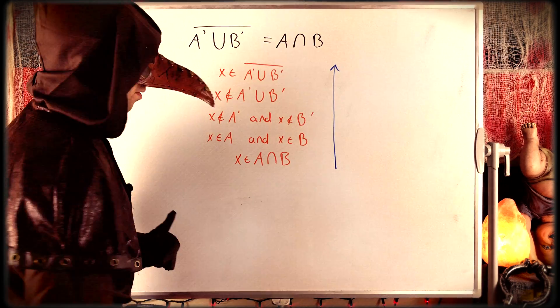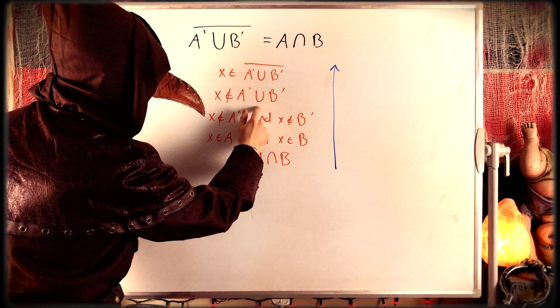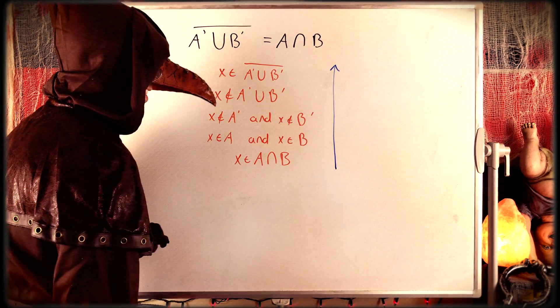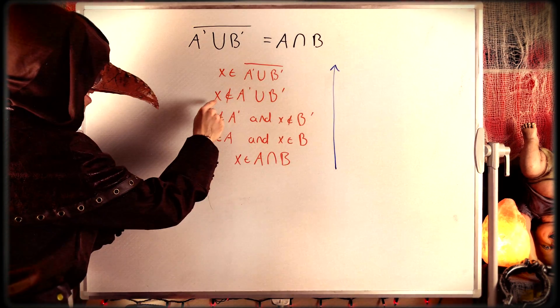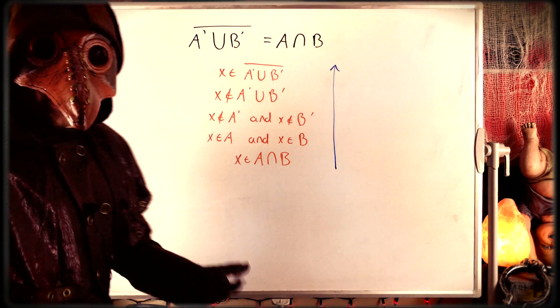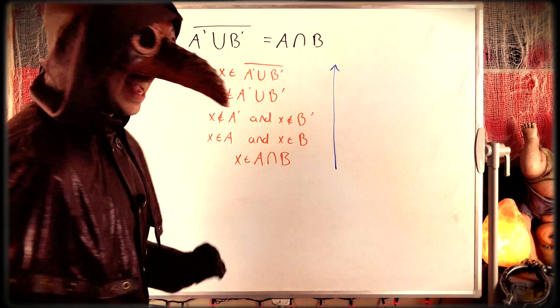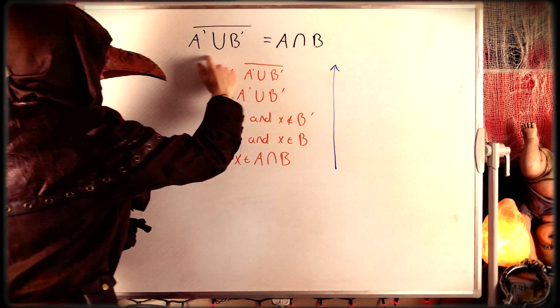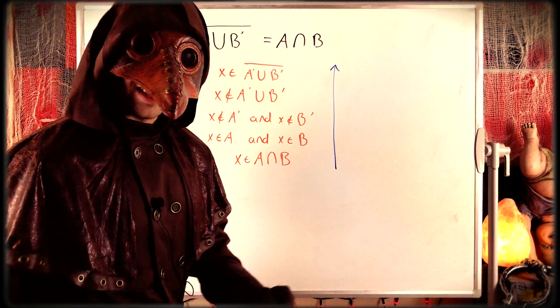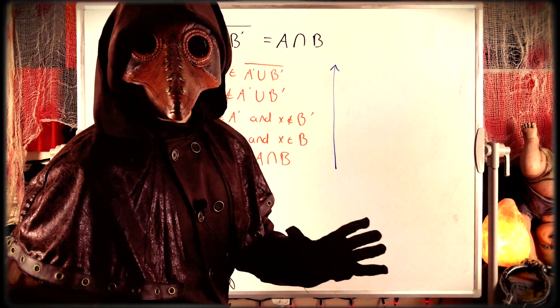Then by definition of set union, that would mean that x is not in the complement of A union the complement of B, which, by definition of complement, means that x is in the complement of that set it doesn't belong to. So you just use the same statements in the other direction, and that would show that this is a subset of this. Thus, they're both subsets of each other. Thus, by definition of set equality, these two sets are equal.